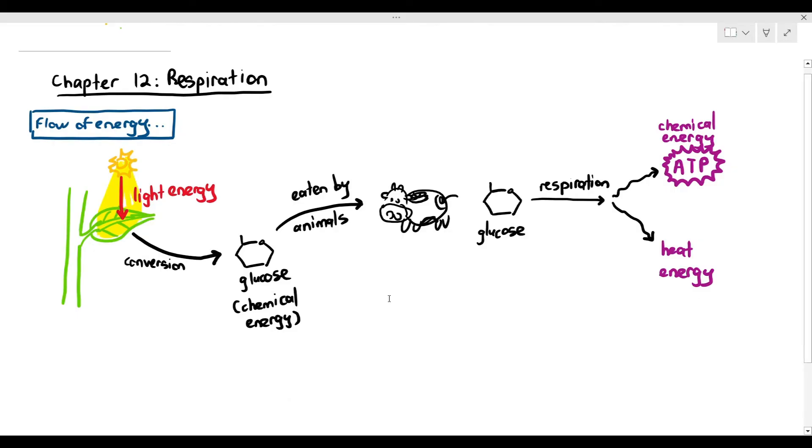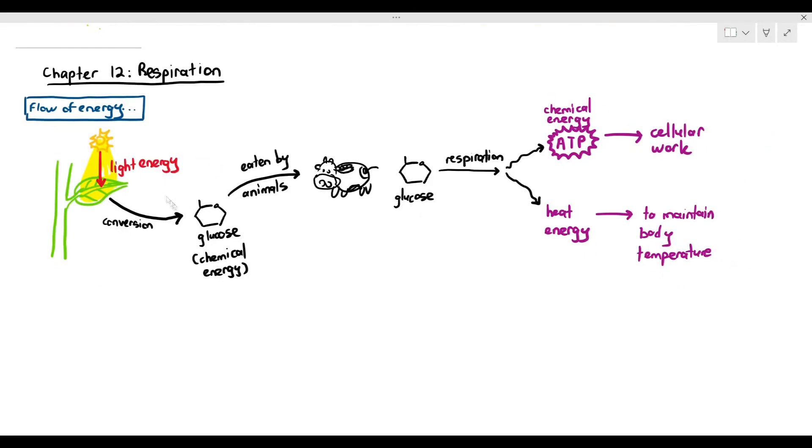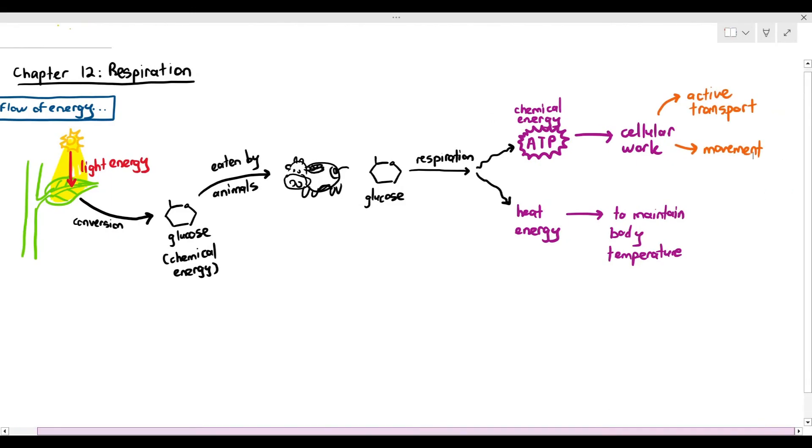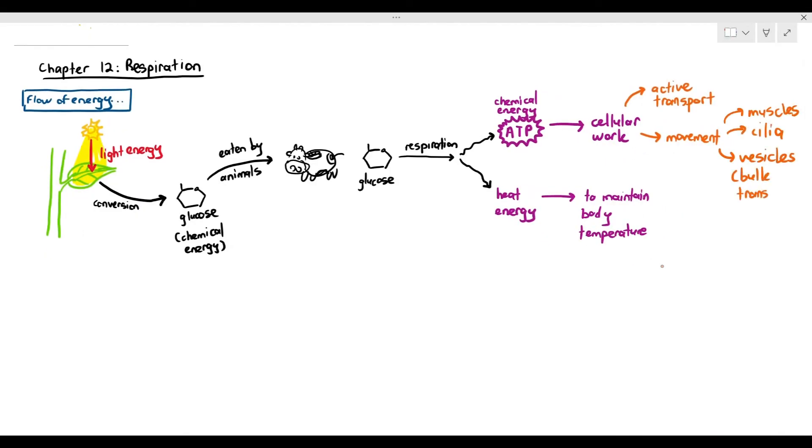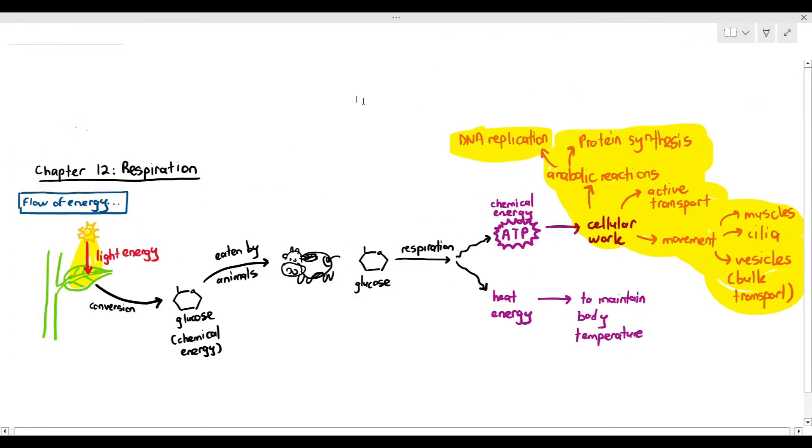So ATP is that important molecule that is needed for cellular work. So what exactly is cellular work? Cellular work is just processes in the cell that requires energy. For example, active transport to move particles from a lower to higher concentration against the concentration gradient. Movement of the cells, for example, muscle movement, movement of the cilia, vesicle movement, for example, in bulk transport such as endo and exocytosis. And also anabolic reactions. Anabolic reactions are reactions where you build something. For example, protein synthesis and also DNA replication. Now, you must know some examples of this cellular work. They may ask you this in the exam.